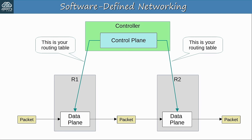Quiz question 3: Which of the following network functions would you expect to be centralized in SDN? The answer is A, calculating routes. Options B, C, and D are all data plane functions — they describe functions involved in forwarding messages. Calculating routes is a function of the control plane and will likely be centralized in an SDN architecture.